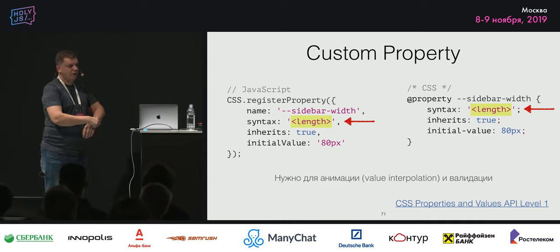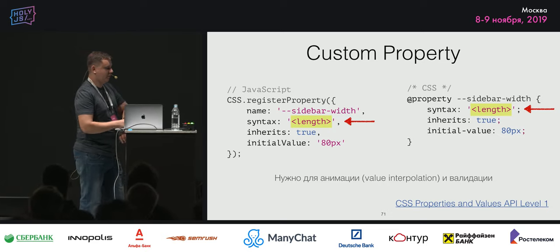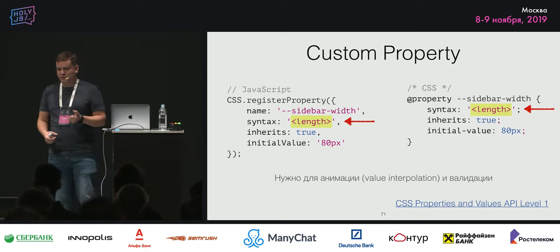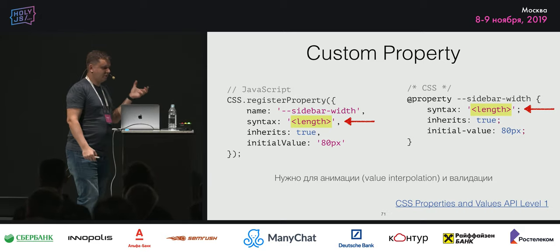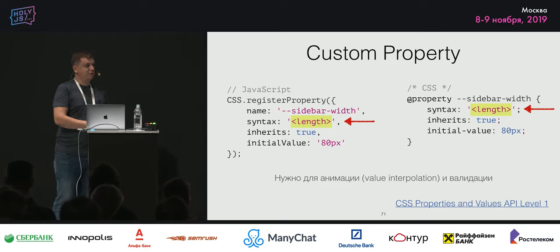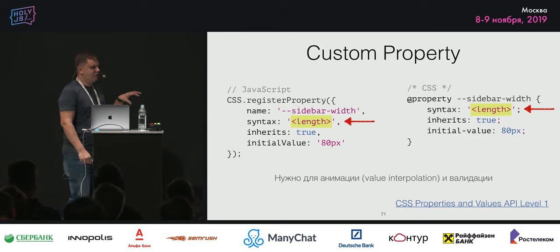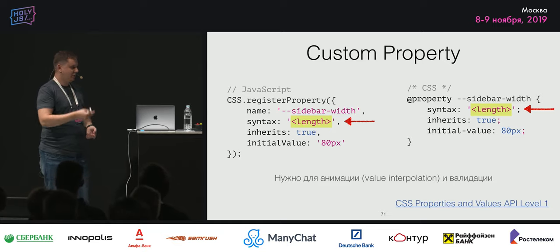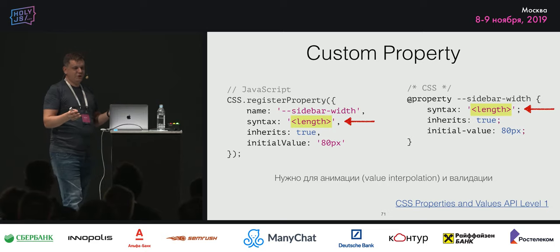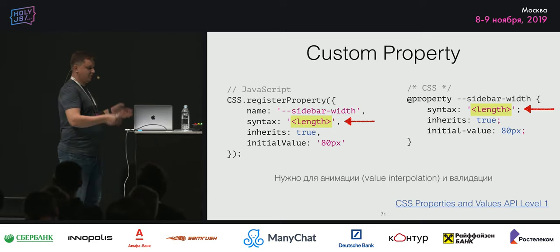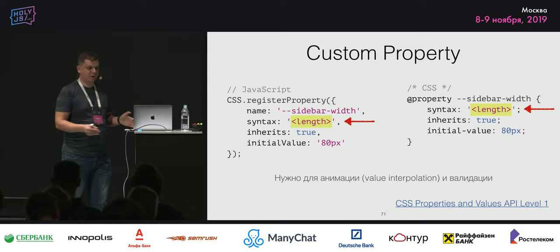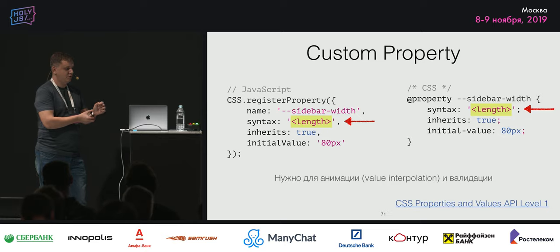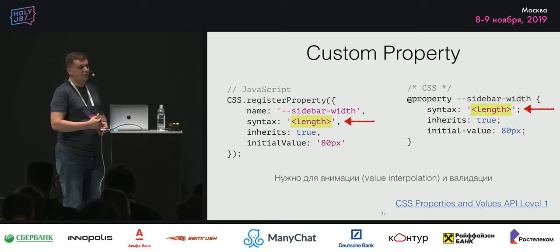Сейчас в Chrome уже выехал специальный метод registerProperty, который можно задавать для определённых имён custom property — в каком синтаксисе они должны быть. Например, в данном случае это sidebar-width, и здесь задаётся, что это length. Также здесь можно задать значение по умолчанию. Это нужно для того, чтобы делать анимации. Дело в том, что когда используется custom property и мы хотим какое-то свойство проанимировать, браузер не понимает, что за тип значения, и не может его интерполировать. Когда мы говорим ему, что это length, он знает, как её интерполировать, и анимация работает. То же самое предлагается внедрить и в CSS — появится новый @property, но пока его ещё не имплементировали.